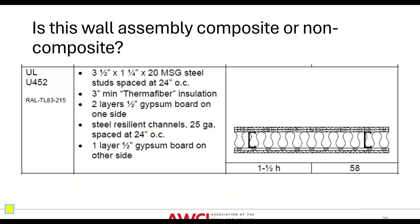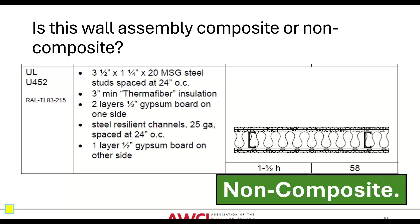Here's a totally different design, UL Design U-452. It has three and five-eighths inch studs at 20 MSG (which is 33 mil), three-inch thermofiber insulation, two layers of half-inch gypsum board on one side, and steel resilient channels — represented by a dashed line on the lower flange of the studs in the diagram. Because that resilient channel decouples the bottom gypsum board from the flanges, this is also a non-composite assembly.